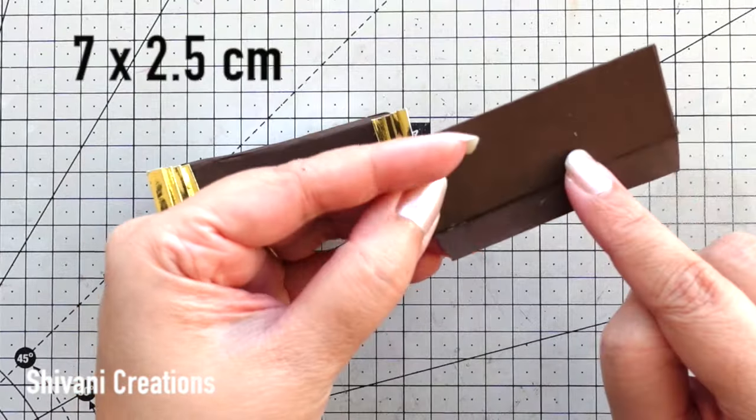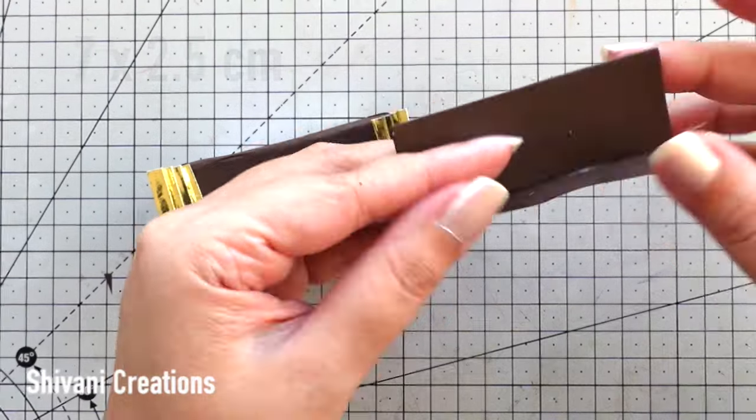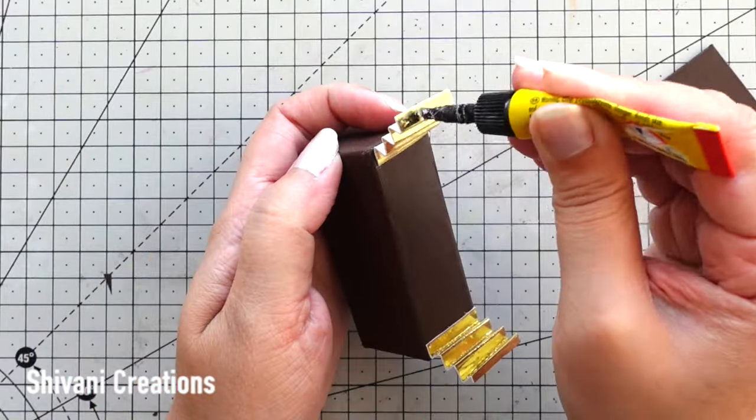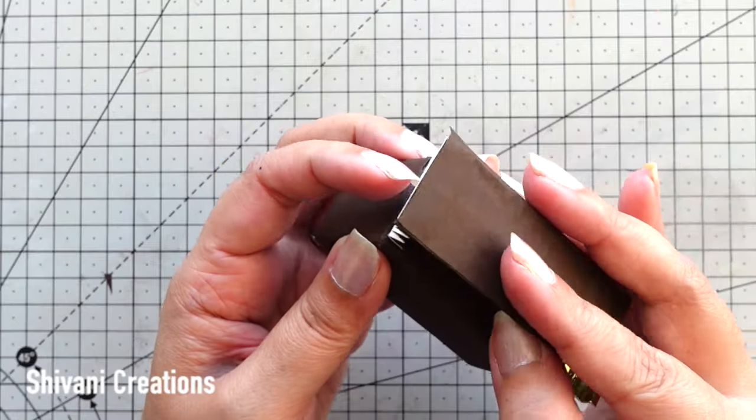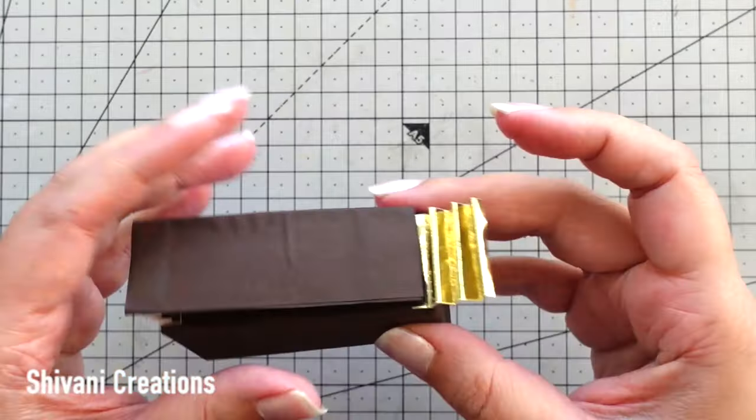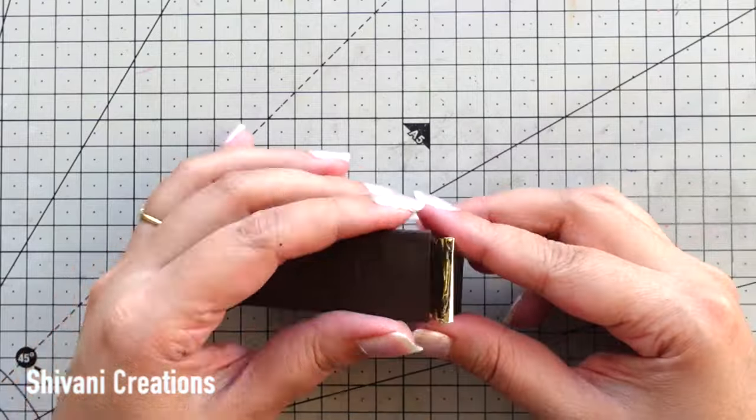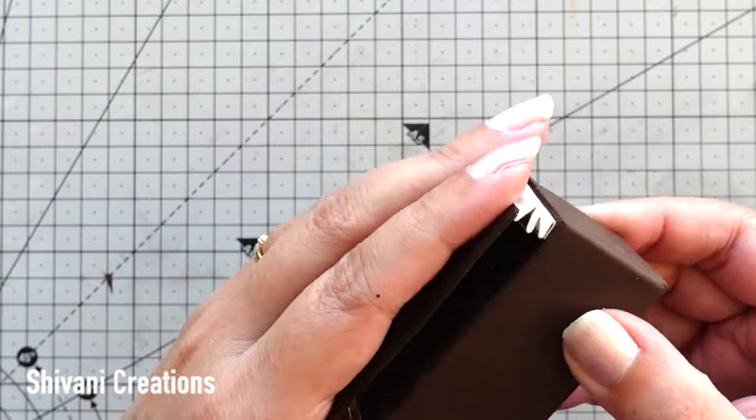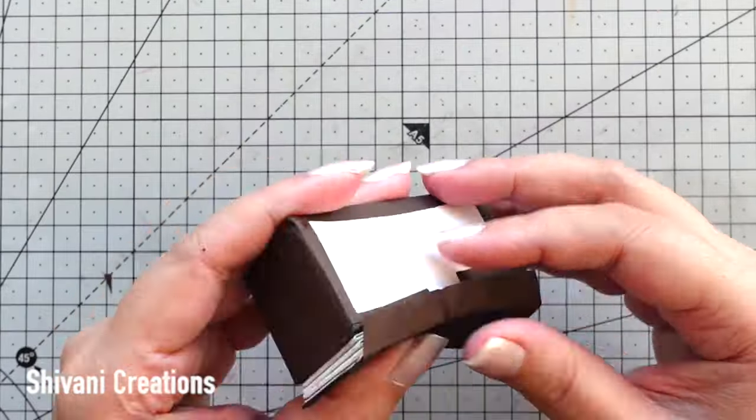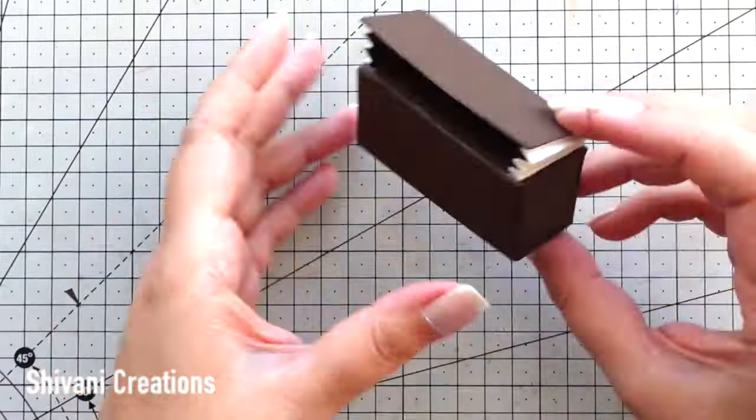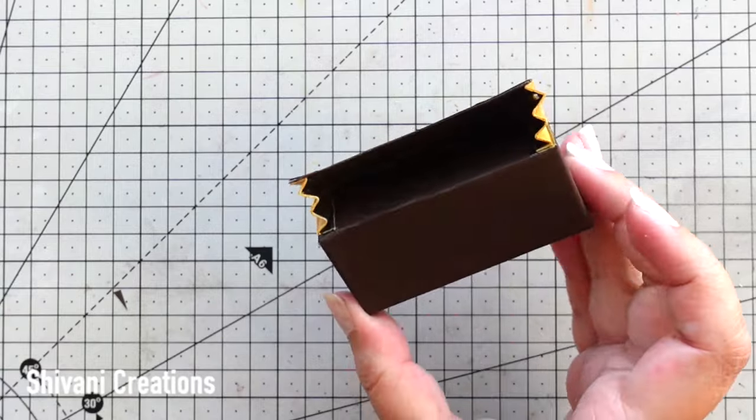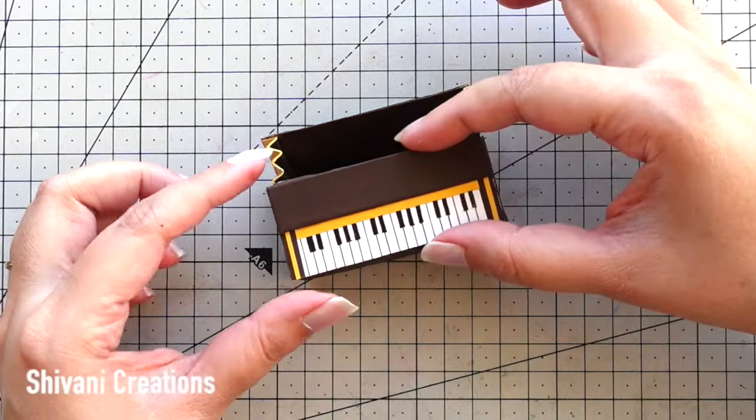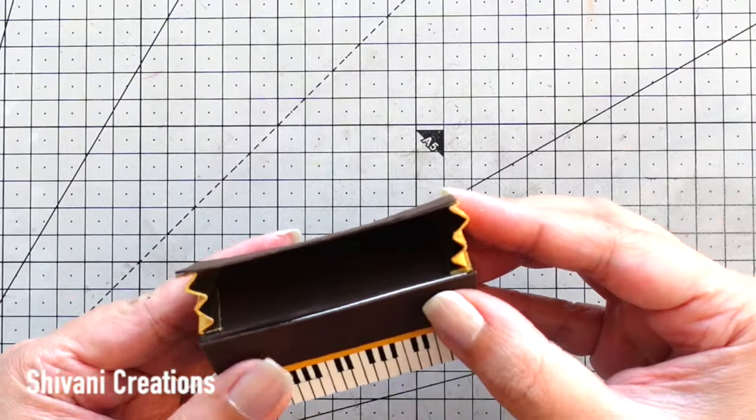Then taking 7x2.5cm brown sheet and just kept 1cm folded part extra so that we can connect in the bottom. Now I am attaching these zigzag shapes with this brown sheet and sticking the 1cm folded part in the bottom. So it should look like this and the back mechanism is ready. Then I am going to stick my keyboard on top of this.